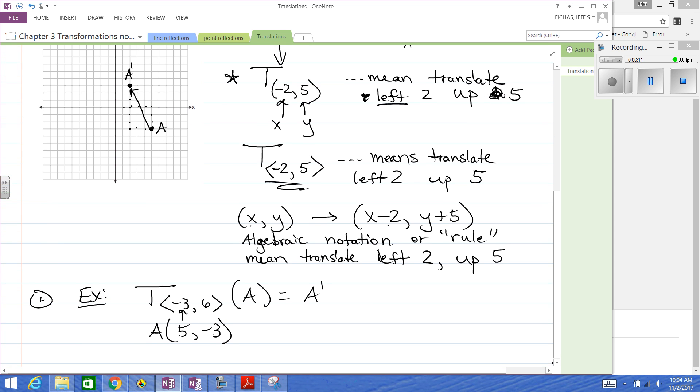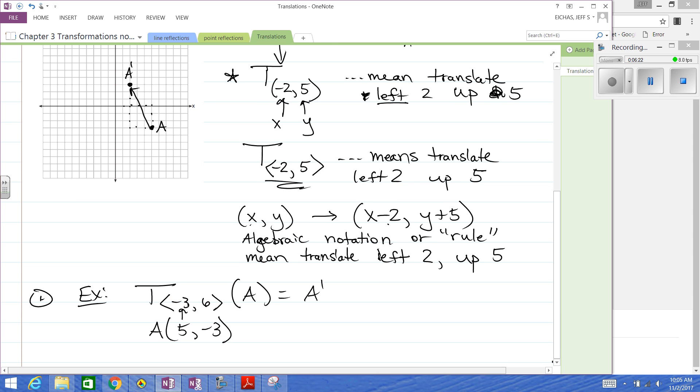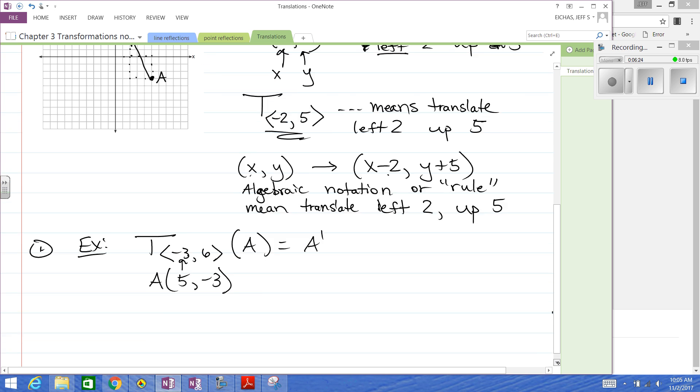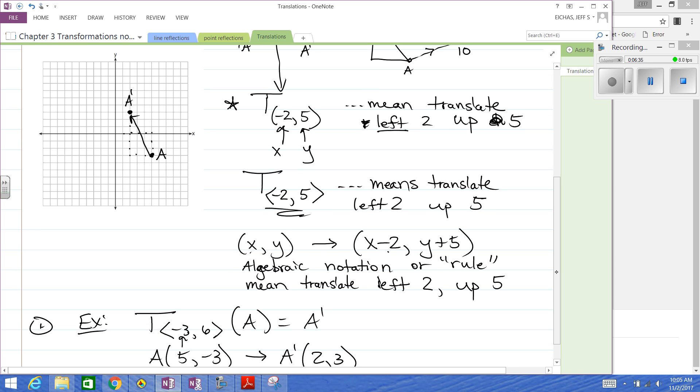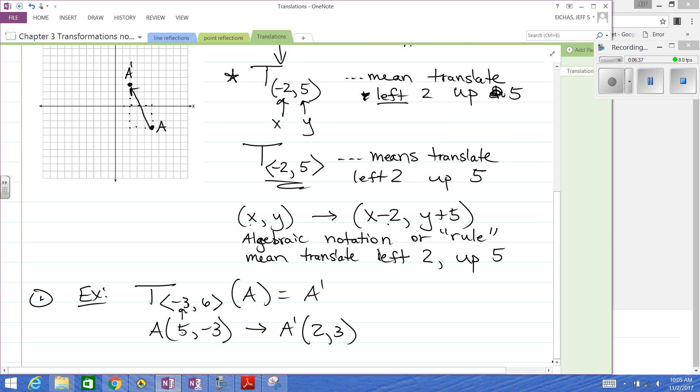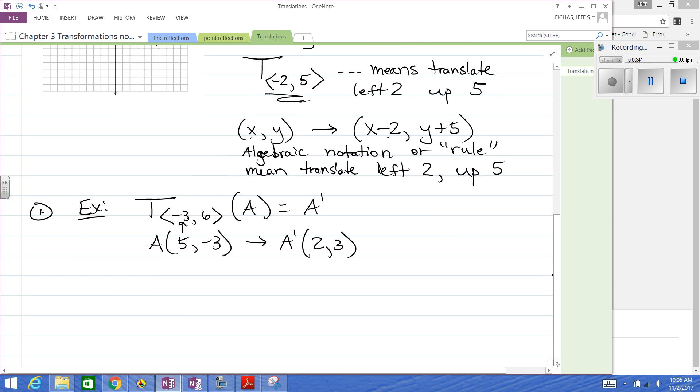Now, A to A prime is a directed segment. And then the direction is left 3 up 6. So that's how we're going to do that. And every point in the problem would move the same amount. That's going to go to, and you can do it algebraically too. We'll bet that A prime is going to be at 2, 3. And if you can see that, all I did was I subtracted 3 from the 5, and I added 6 to the negative 3.